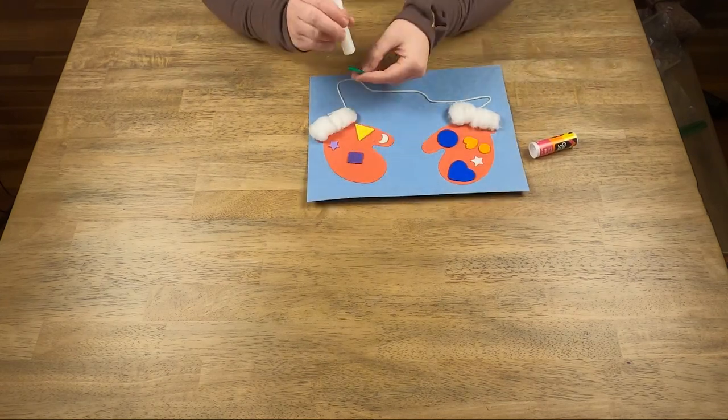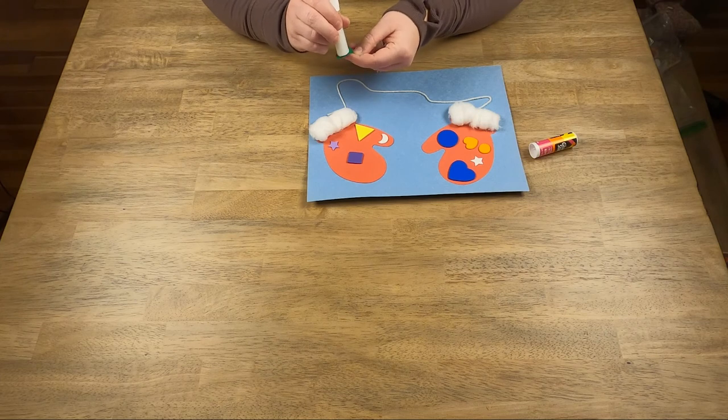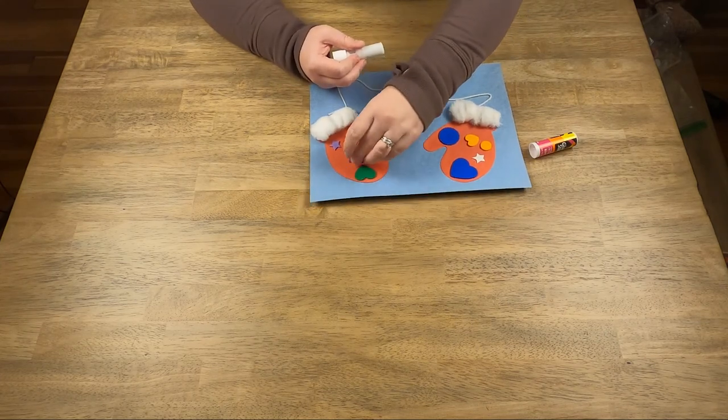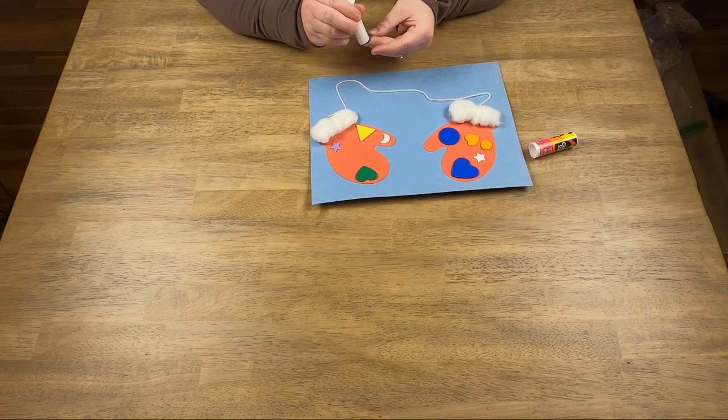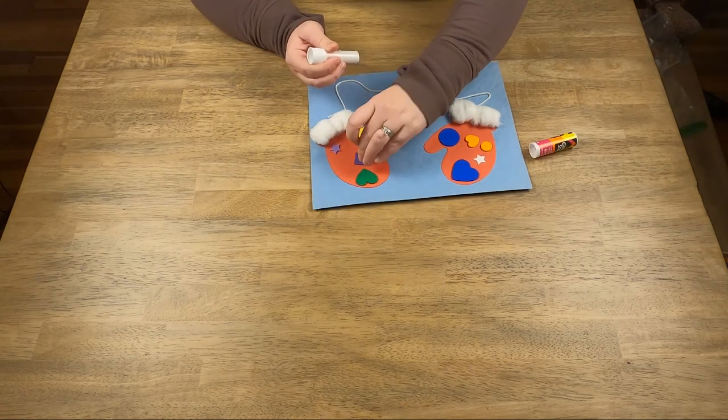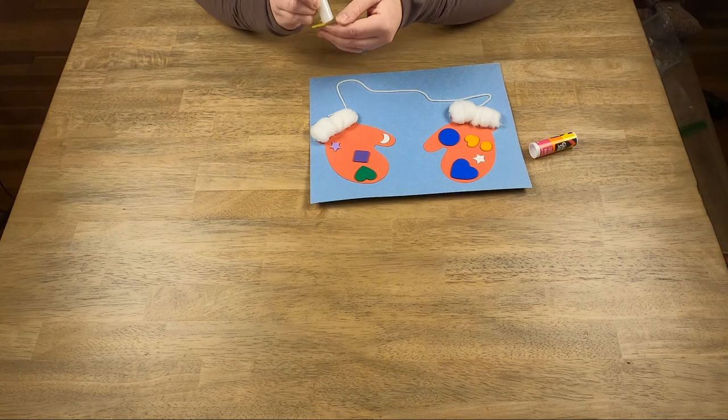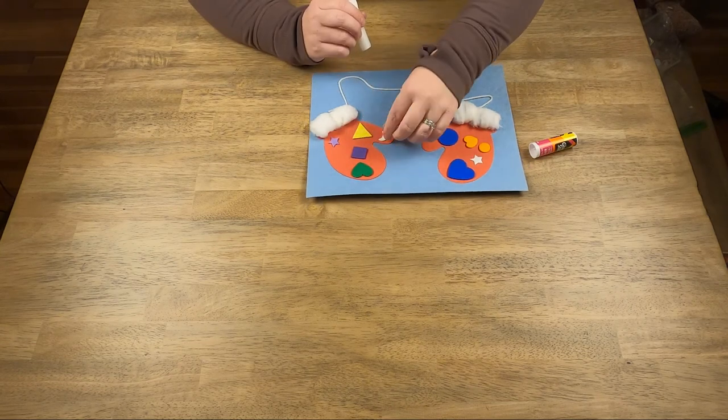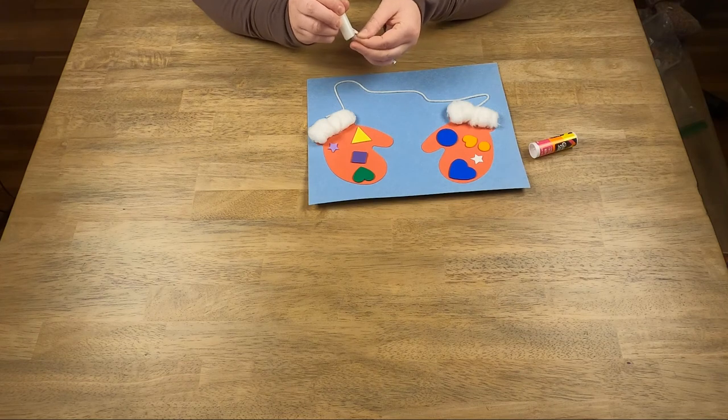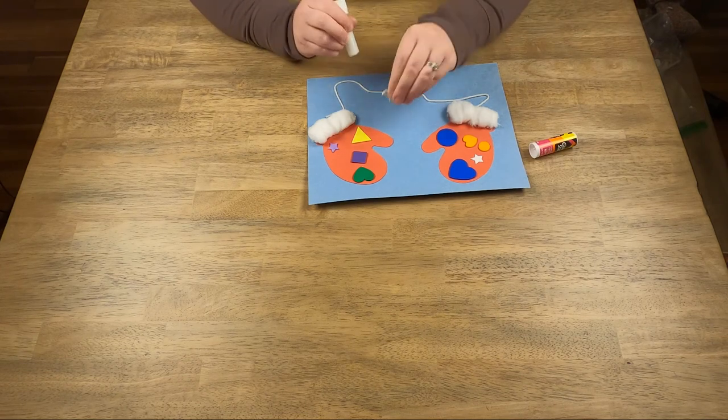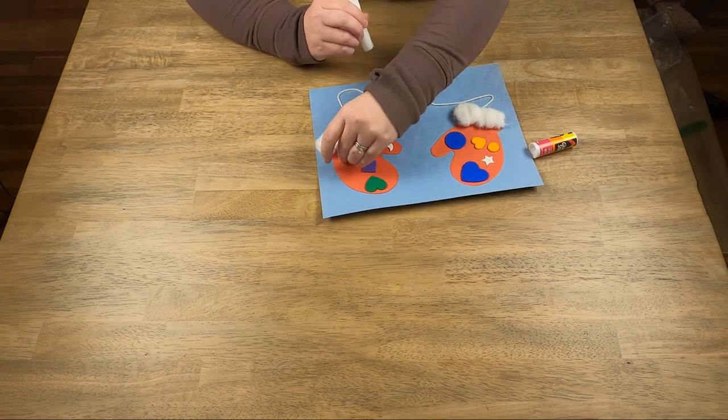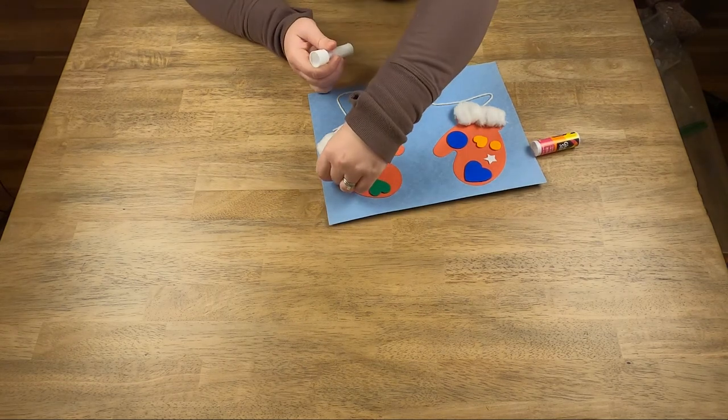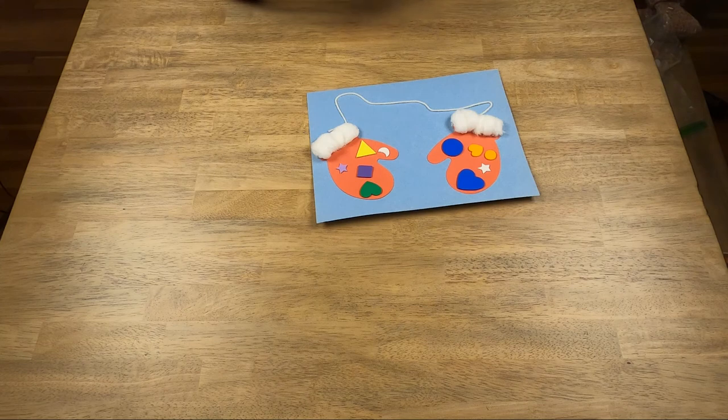What about the other side? Let's do the green heart. Remember you might have different shapes and that's okay. Square. This is a triangle. Little crescent moon, like that. And a star. And that is it.